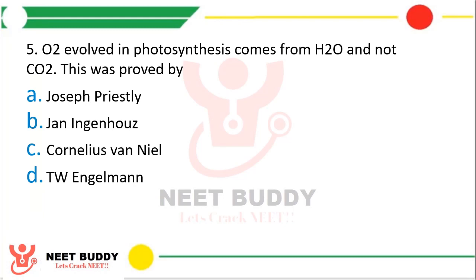Question 5. Oxygen evolved in photosynthesis comes from water and not from carbon dioxide — this was proved by option C, Cornelius Van Neel.